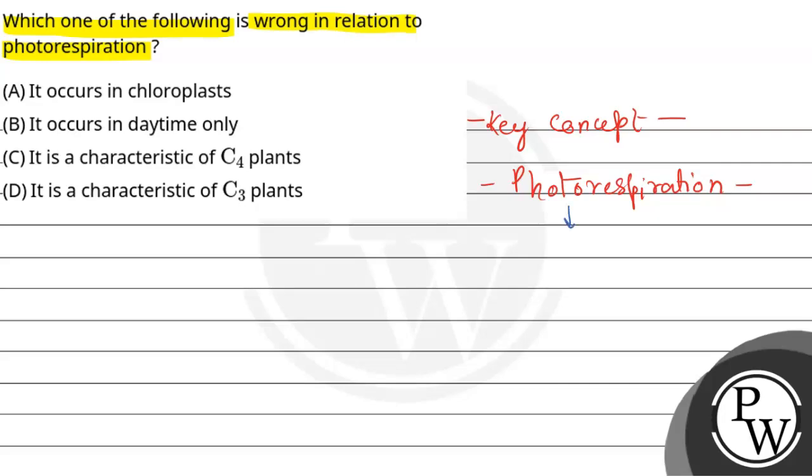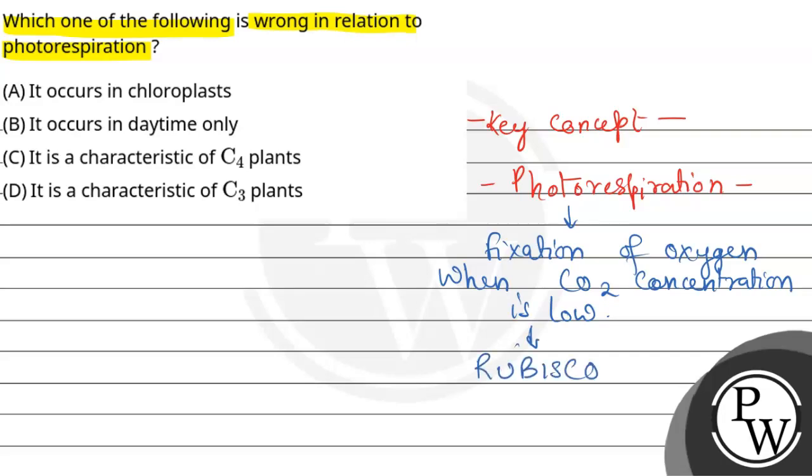So, what is photorespiration? Instead of fixation of carbon dioxide, we get the fixation of oxygen when carbon dioxide concentration is low and oxygen concentration is high. And this fixation is done by the enzyme Rubisco, also known as ribulose bisphosphate carboxylase oxygenase.